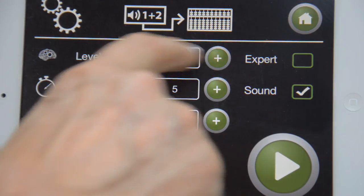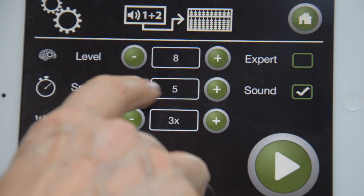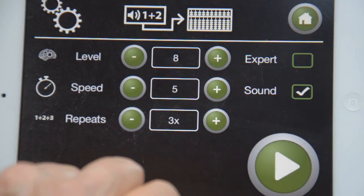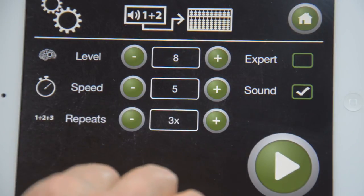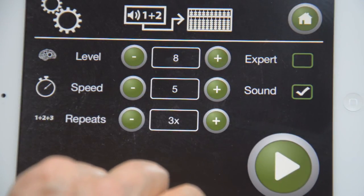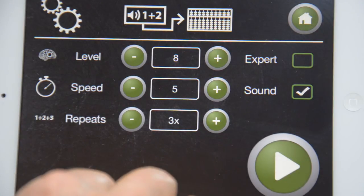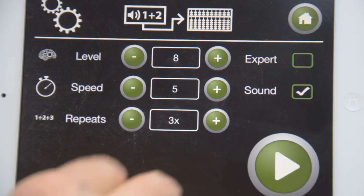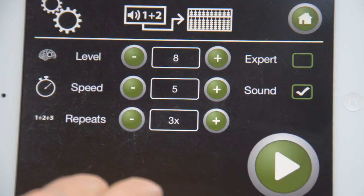I will set level 8, I will set the speed to 5 seconds between every operation and I will add 3 repetitions. Also you will hear that the voice is in Swedish. The text in the tutorials are in Swedish because we are in Sweden now and the app adapts to the country.